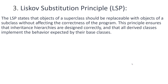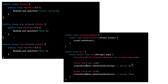The third principle is the Liskov Substitution Principle. The LSP states that objects of a superclass should be replaceable with objects of a subclass without affecting the correctness of the program. This principle ensures that inheritance hierarchies are designed correctly and that all derived classes implement the behavior expected by their base class. For example, here we have an Animal class as a superclass — all animals make sounds, so we have a makeSound method.